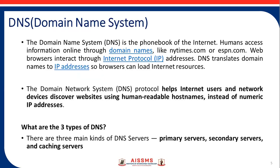The next protocol is DNS, that is the domain name system. The domain name system protocol helps internet users and network devices discover websites using human-readable host names instead of numeric IP addresses. DNS translates domain names to IP addresses so browsers can load internet resources. There are three types of DNS servers: primary servers, secondary servers, and caching servers.